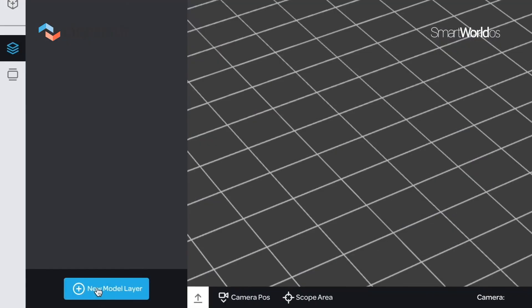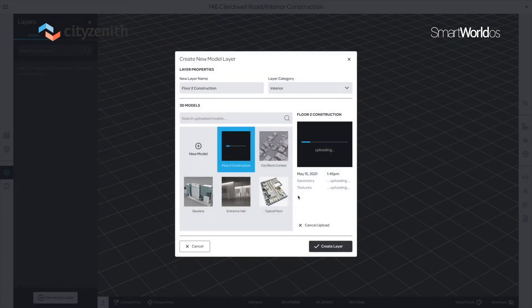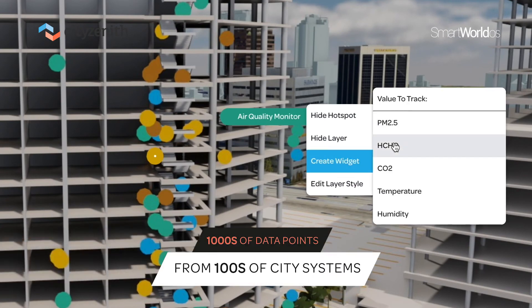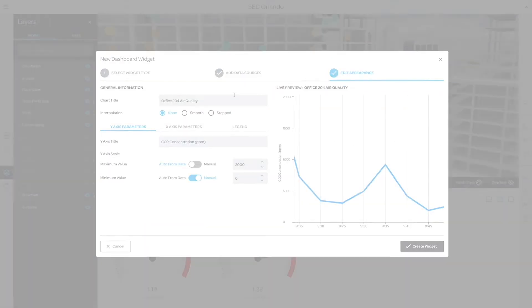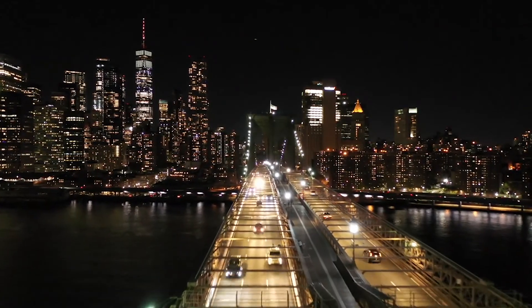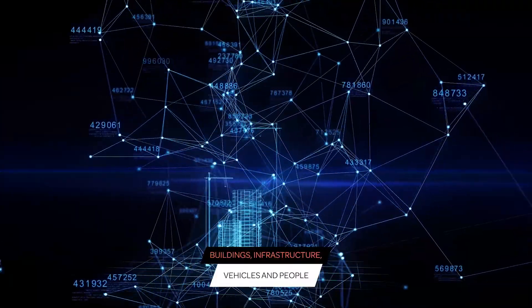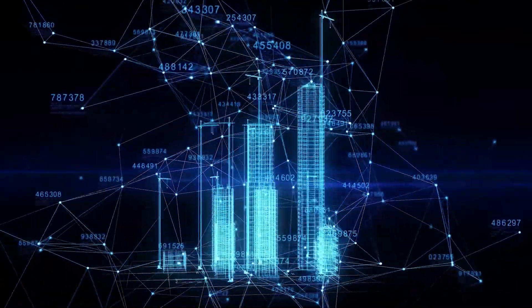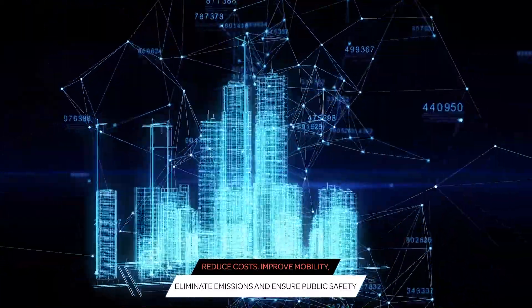Imagine walking through a virtual representation of your city on your computer, where digital objects – roads, streetlights, bridges, buildings – are connected to thousands of data points from hundreds of city systems. As you move from block to block, the Urban Digital Twin is hard at work behind the scenes, using data to optimize the interplay of buildings, infrastructure, vehicles, and people to reduce costs, improve mobility, eliminate emissions, and ensure public safety.